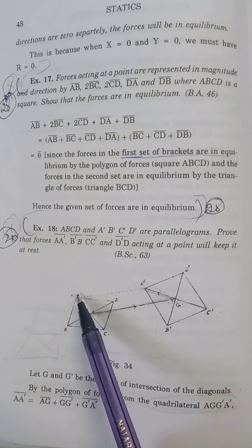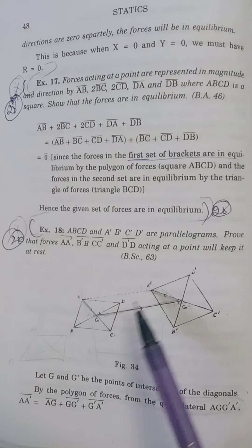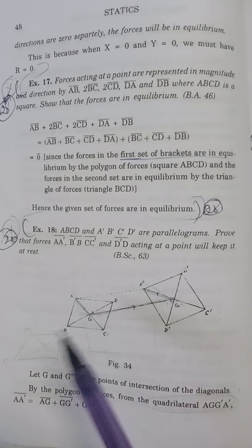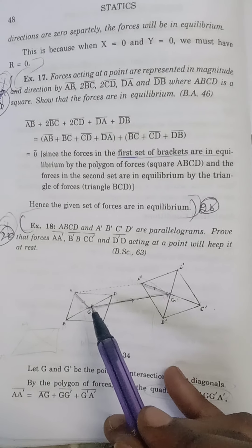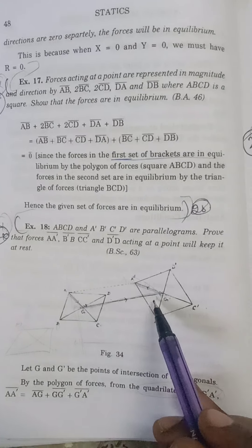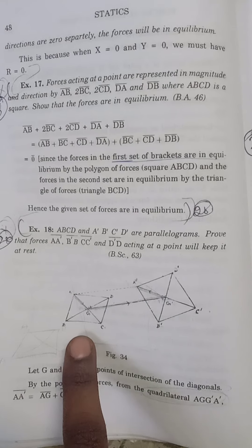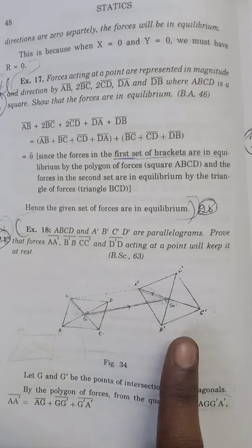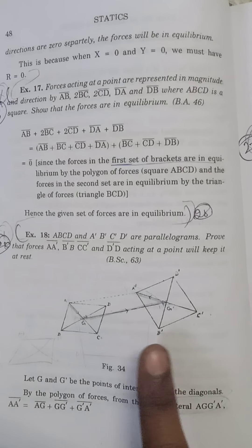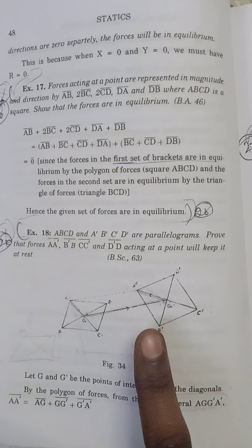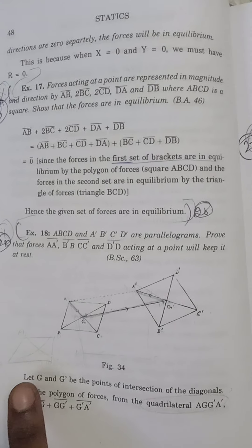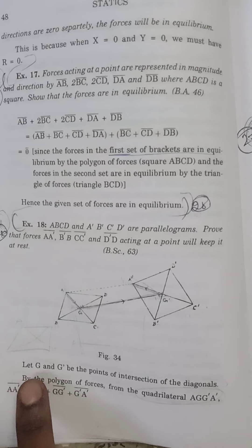We join AA' and the diagonals. The intersection of these lines is G and G'. For parallelogram ABCD, this is G, and for parallelogram A'B'C'D', it is G'.